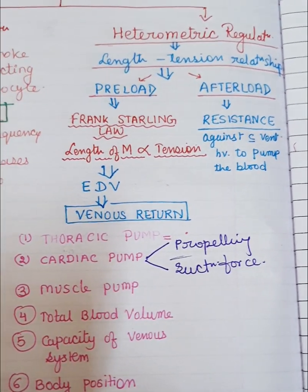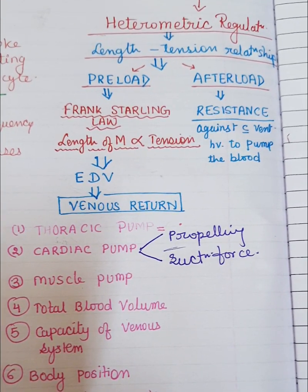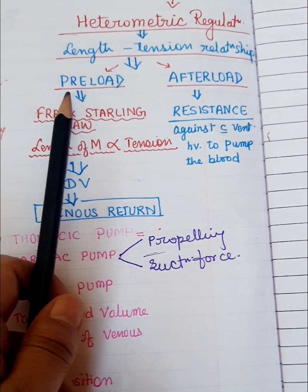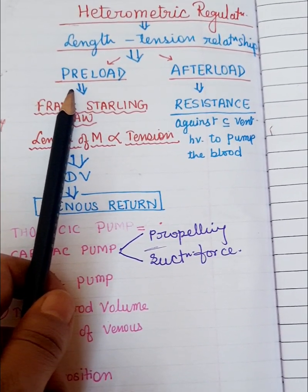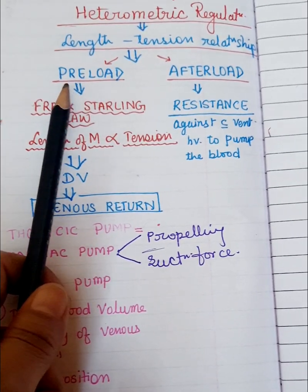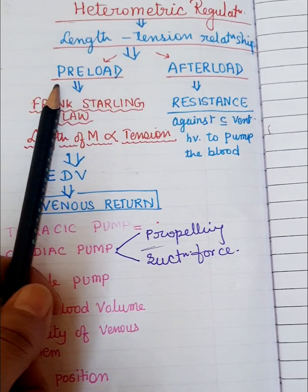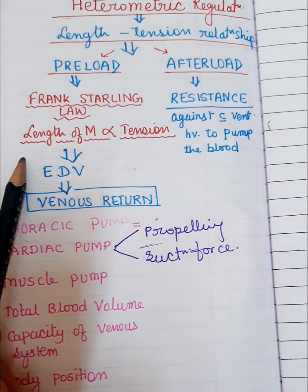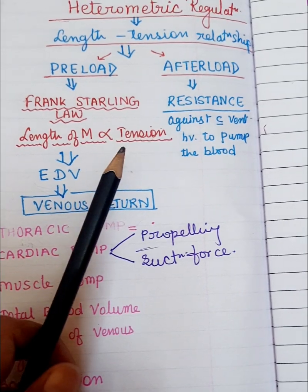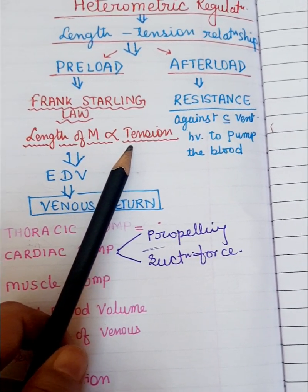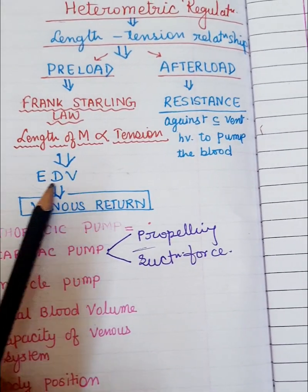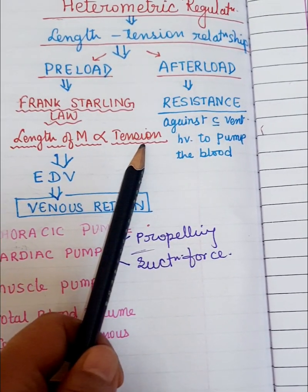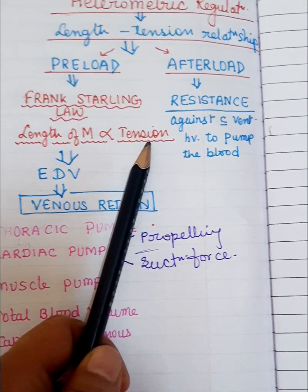Heterometric regulation means the force of contraction of the myocardium depends upon the preload and afterload. Preload means the degree to which the myocardium is stretched before contraction — how much blood the ventricle is receiving. This causes a stretching effect on the myocardium, and this stretching is directly proportional to the development of force of contraction. A good amount of end-diastolic volume causes good stretching, leading to good tension or force of contraction.